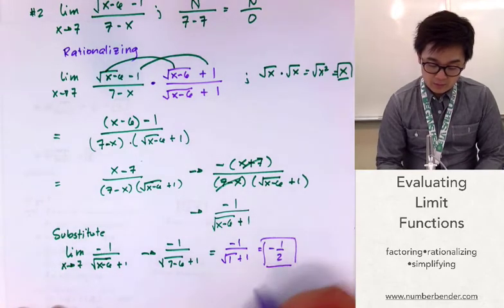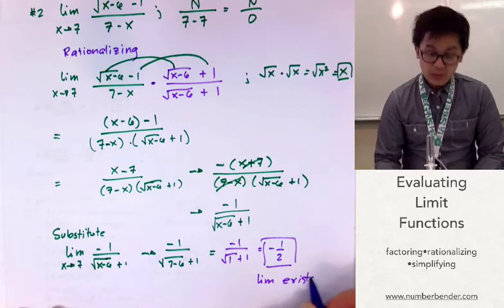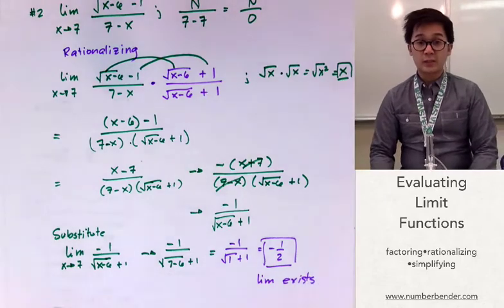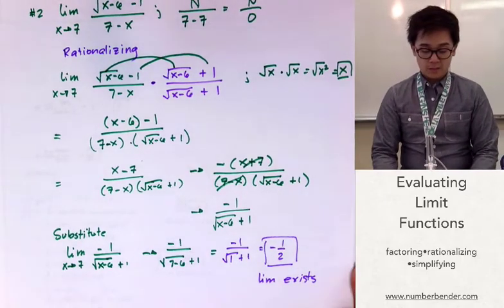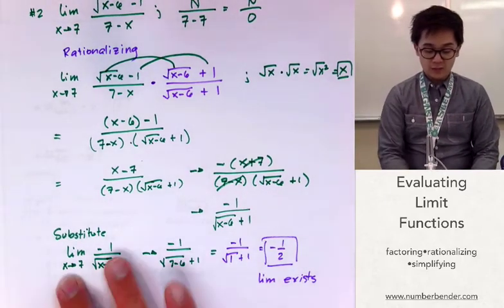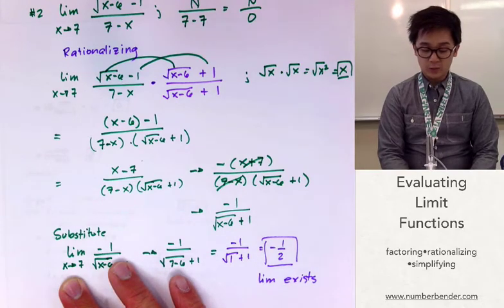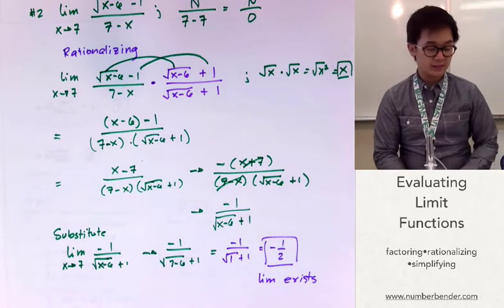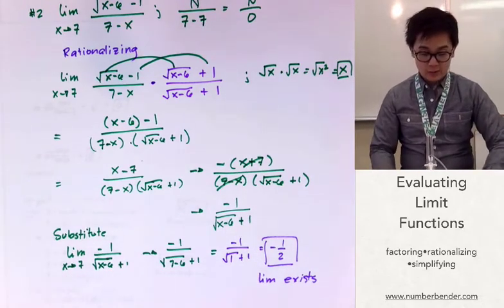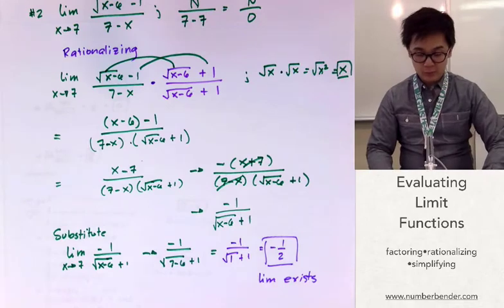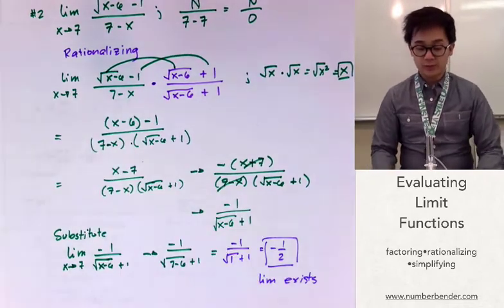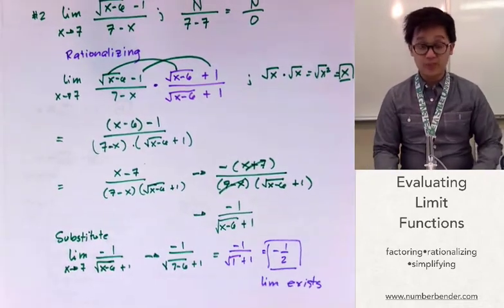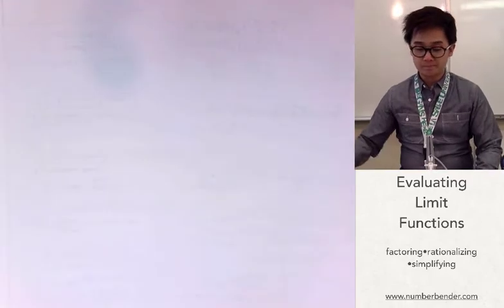So the limit exists. It exists because we found a real number that the function approaches as x approaches 7. That's problem number 2 — we used rationalization to simplify and evaluate the limit function.